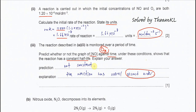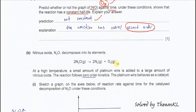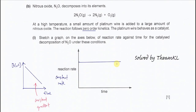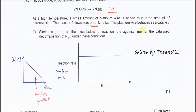The prediction is: not constant, because the reaction is second order, not first order. We must consider ozone because ozone is not in excess. Part B: nitrous oxide, N₂O, decomposes into its elements, nitrogen and oxygen, at high temperature. A small amount of platinum wire is added to a large amount of nitrous oxide. The reaction follows zero order kinetics and platinum wire behaves as a catalyst.